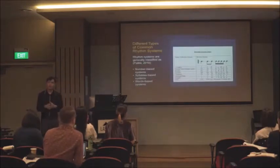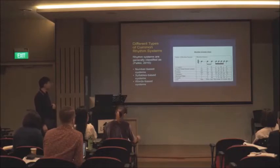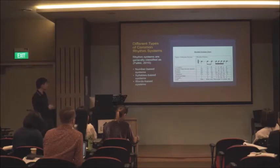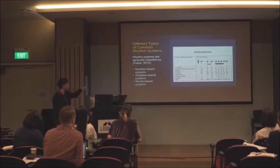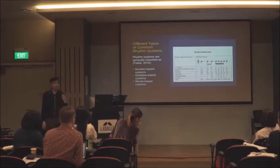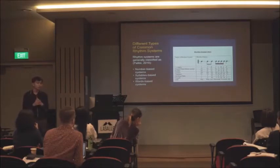In general, there are three main types of rhythm systems. The number-based system — on the right-hand side, '1 E N A' — is the number-based system. The syllable-based system could be the Kodai system. And word-based systems use words such as 'one monkey running towards me,' meaning music educators make use of words to teach students rhythm.